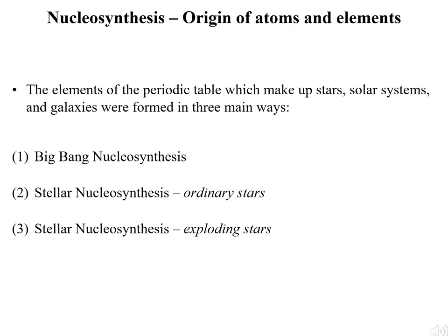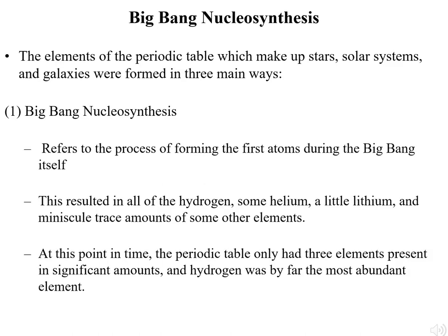The first of these processes occurred early in the history of the universe, during the time of the Big Bang, when the very first atoms were formed. The other two occur in stars. These first atoms were almost all hydrogen — the simplest and lightest of the elements. At this time, most of the other elements of the periodic table did not yet exist.